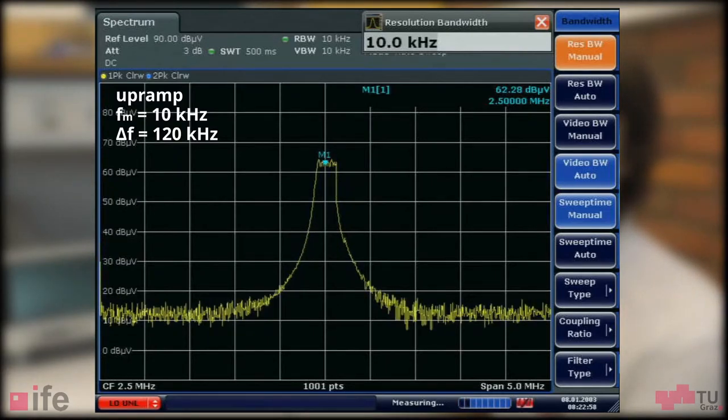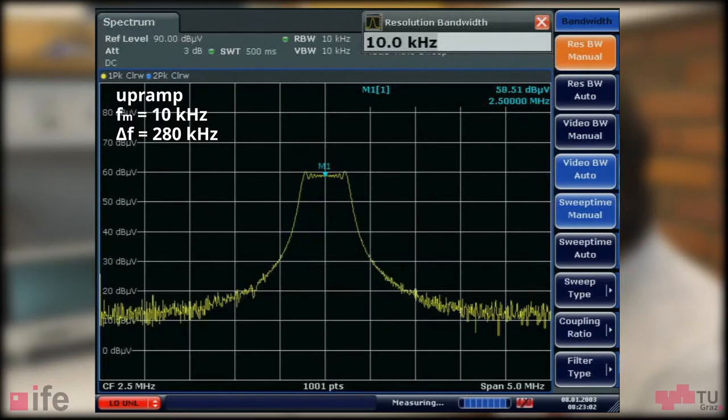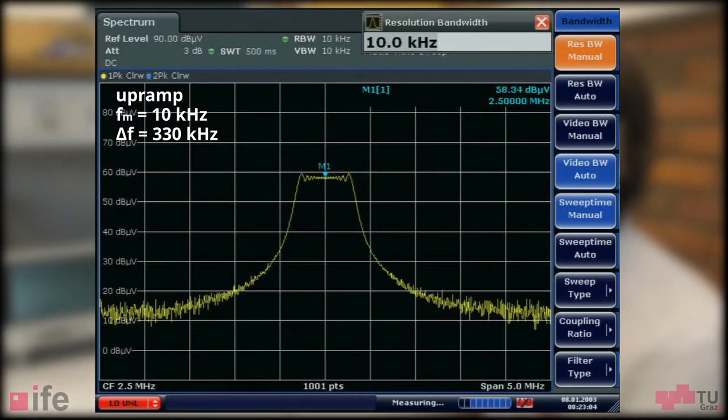By increasing the frequency deviation, we can see the signal amplitude drops, which is exactly what we want to achieve when using spread spectrum clocking for EMI reduction.